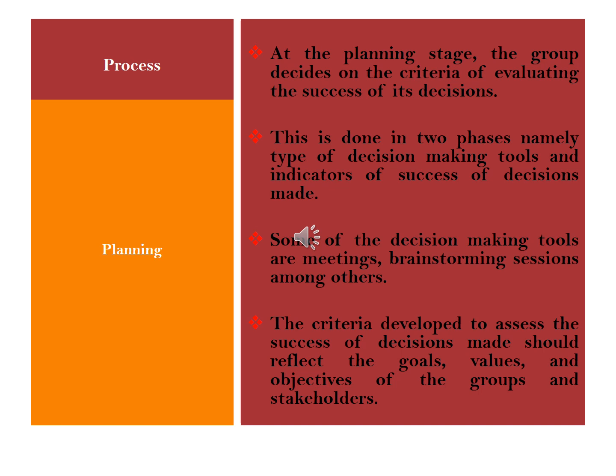The first stage of decision making is called the planning stage. At the planning stage, the group decides on the criteria for evaluating the success of its decision, and this is done in two phases. Phase one: a decision is made on the type of decision making tools to be used. Phase two: a decision is made on the type of indicators to be used to evaluate the success of group decisions. Some decision making tools include meetings and brainstorming sessions, among others.